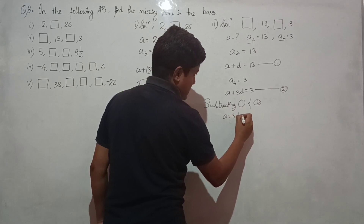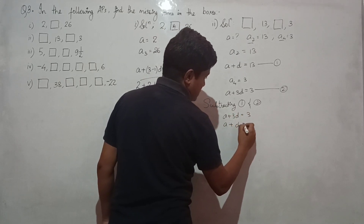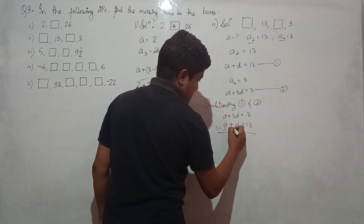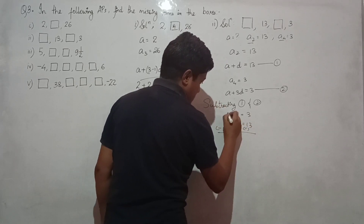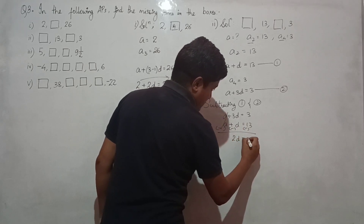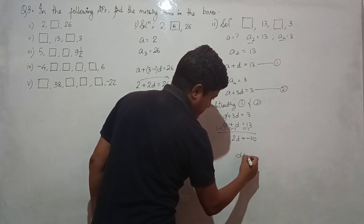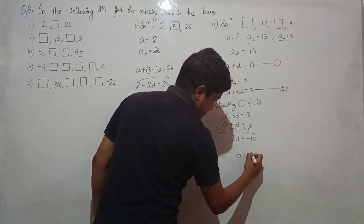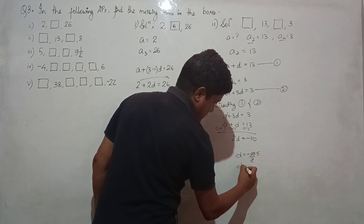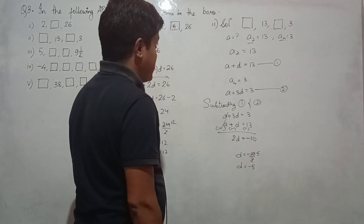Subtracting equation 1 from equation 2: a cancels out, leaving 2d equals minus 10, so d equals minus 5.